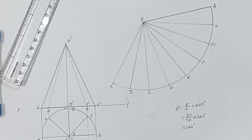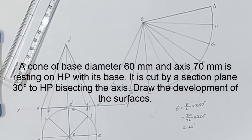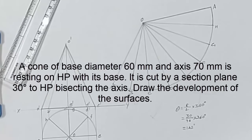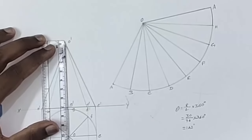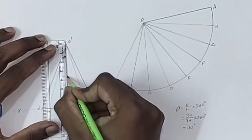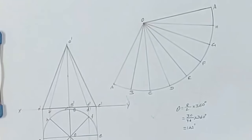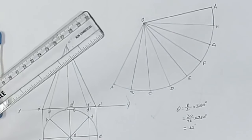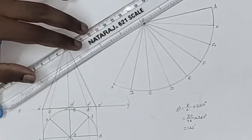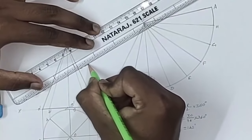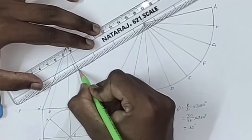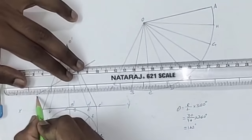Now we have to locate the cutting plane in this simple projection. It is cut by a section plane 30 degrees to HP bisecting the axis. The cutting plane bisects the axis, so as the height is 70 mm, at 35 mm the cutting plane cuts the solid. Now take your protractor or tilt your rafter scale to 30 degrees and mark the cutting plane here. This angle is 30 degrees.